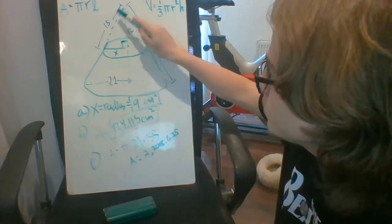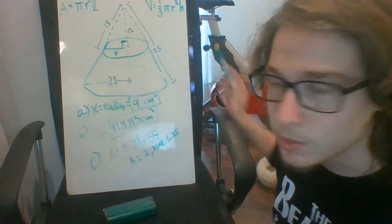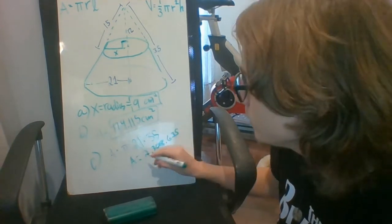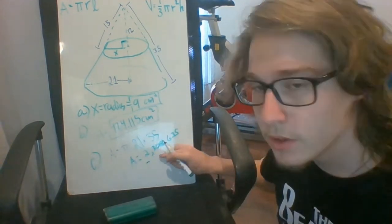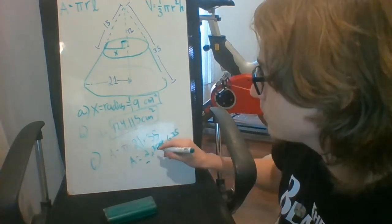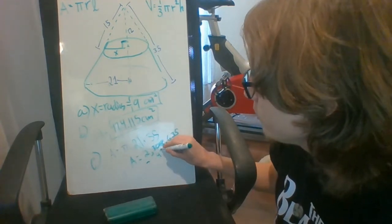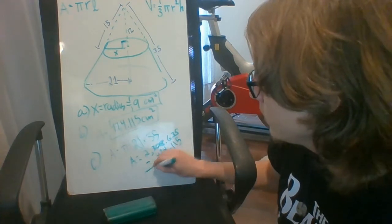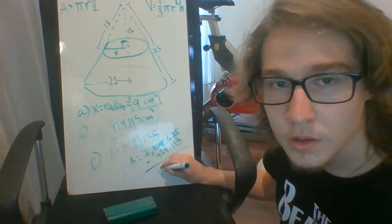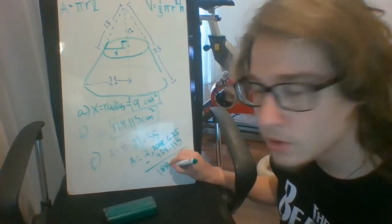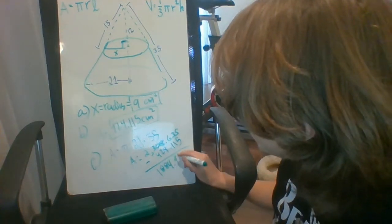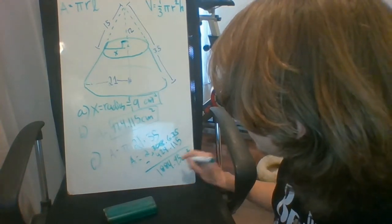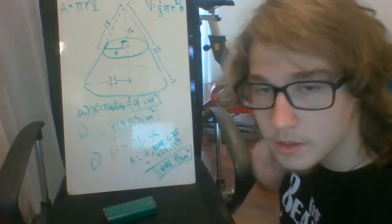So now we have to subtract the curved surface area of the top cone, which is what we got in part B. So we do 2308.635 minus 424.115, and we're going to end up with 1884.95 centimeters squared. So that is the answer.